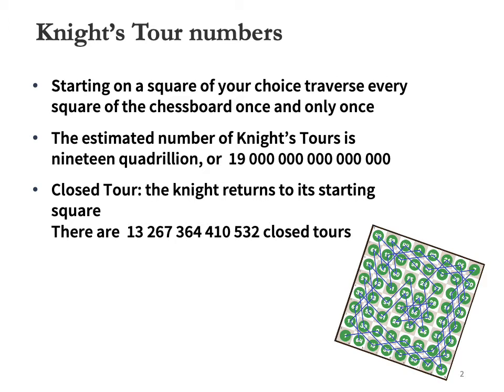Here is the definition of the knight's tour. Starting on a square of your choice, traverse every square of the chessboard once and only once. If the knight's landing square is a knight move away from its starting square, then it's called a closed tour. Otherwise, the tour is open.